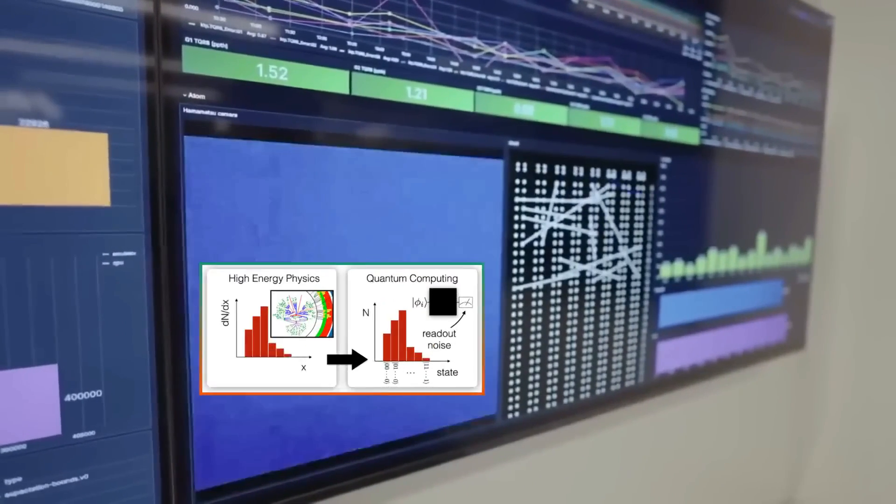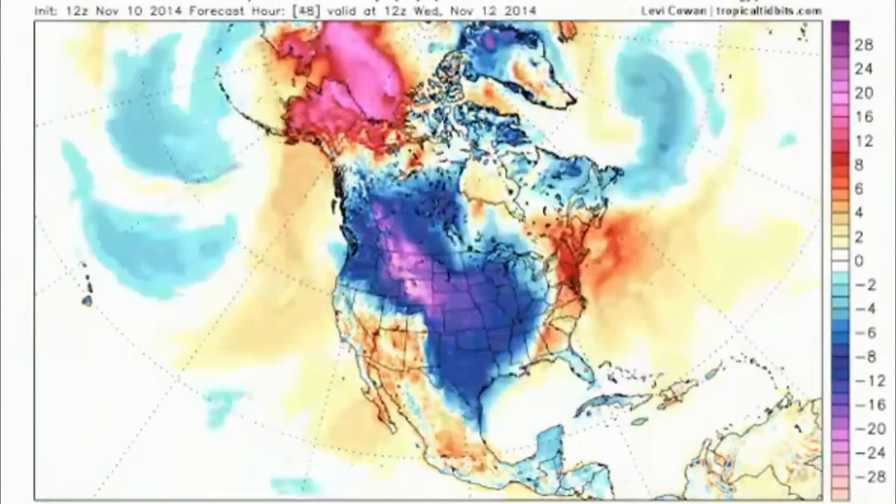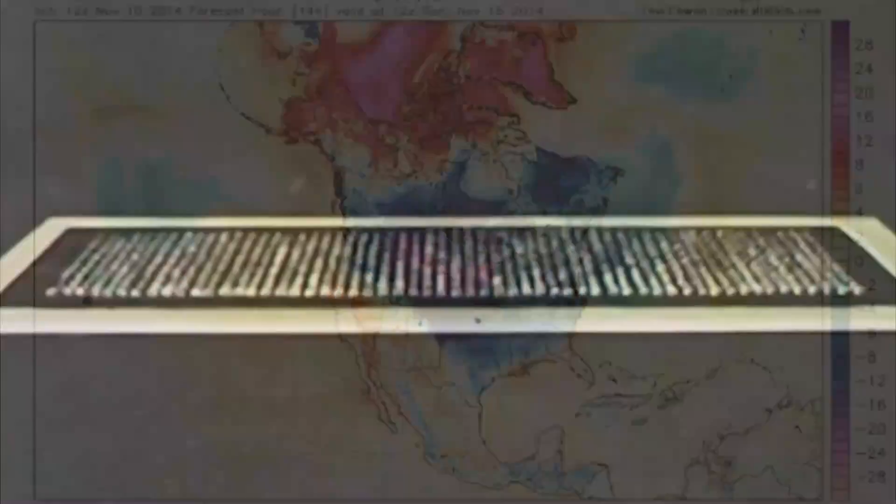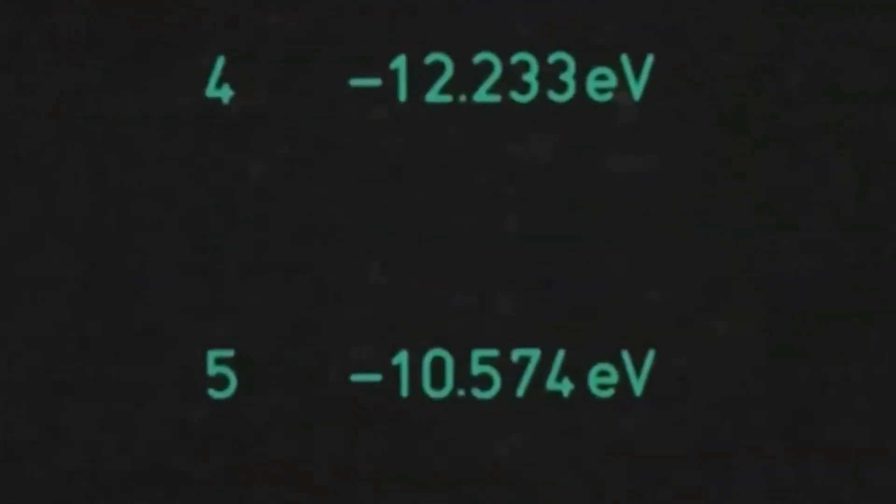self-similar, recursive pattern. A sequence that repeated across multiple experimental runs, defying entropy. It was dubbed the Omega Pattern. At first, engineers thought it was a glitch, but it wasn't. It was a message.